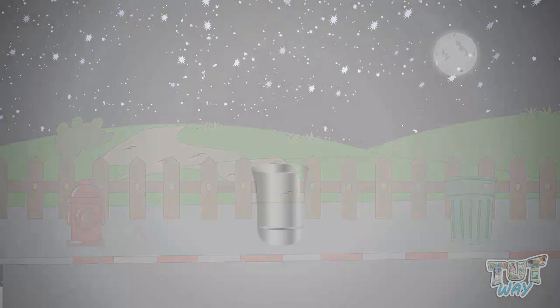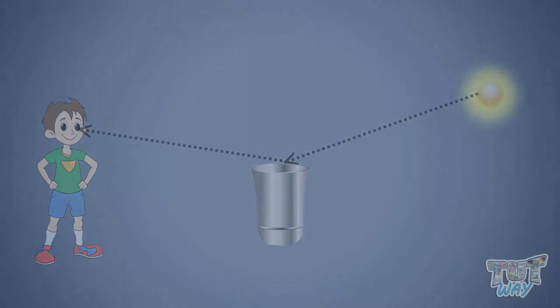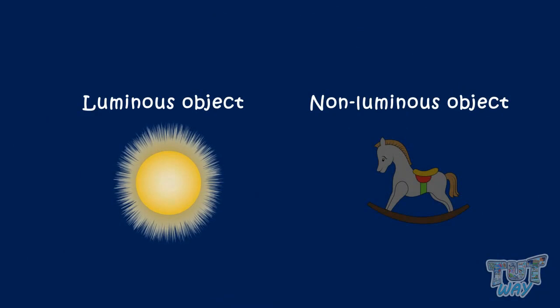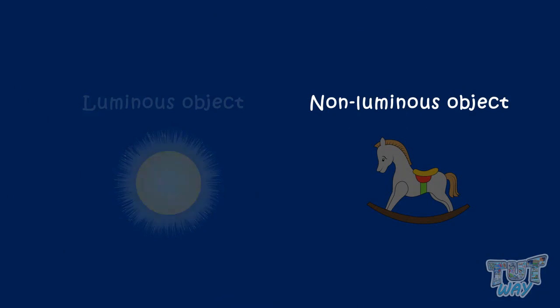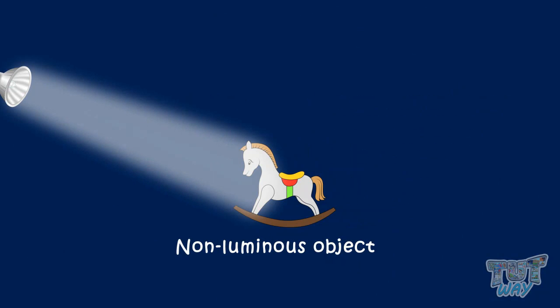So kids, we learnt how do we see different objects, and what are luminous and non-luminous objects. We learnt that all non-luminous objects reflect the light falling on them.